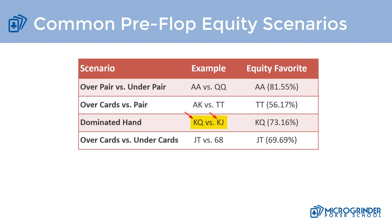King-queen is a 73.16 percent equity favorite versus this dominated hand. I've seen time and time again where students call an open raise from under the gun with a really weak ace with a bad kicker, losing a lot of money — for example, ace-nine versus ace-jack or ace-queen. When we're looking to call a raise, we don't want to call with a hand dominated by our opponent's range on an open raise, three-bet, or isolation raise.